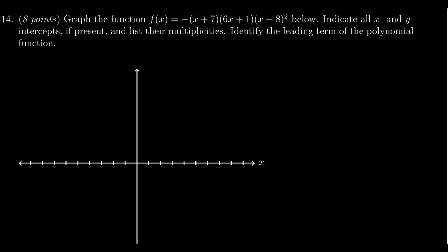In this video, we present the solution to question number 14 for practice exam number 3 for Math 1050. We're given a polynomial function f(x), which fortunately for us is factored. f(x) is -(x+7)(6x+1)(x-8)².